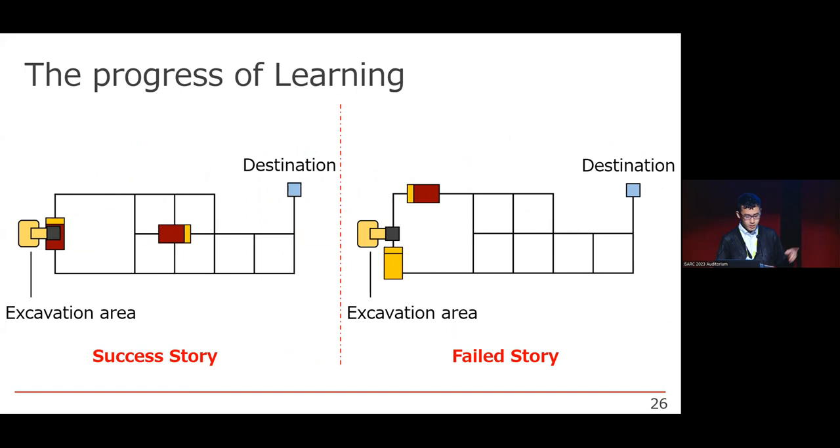This is a video of task execution. The right side is success story and the left side is failure story. In the success story, two machines are cooperatively conducting the carrying task. So we can say we could make the cooperative machines by using our approach and setting the appropriate learning model.